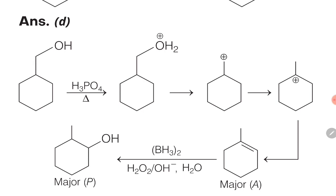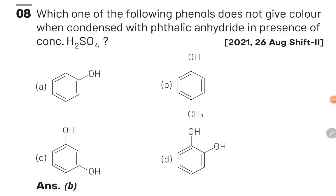With this we have completed question four. The fifth question of this chapter: whenever phenol reacts with phthalic anhydride, it results in electrophilic aromatic substitution and hence the formation of phenolphthalein, which is pink in color. This electrophilic aromatic substitution takes place at the para-position of phenol. In option B, the para-position of phenol is already occupied by a CH₃ group, and therefore option B is the answer — it does not react with phthalic anhydride.